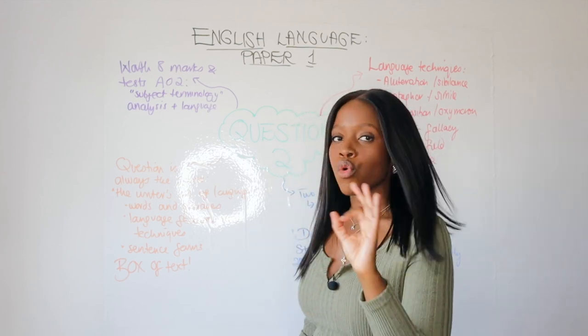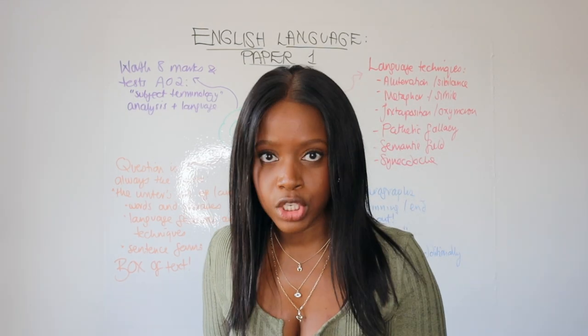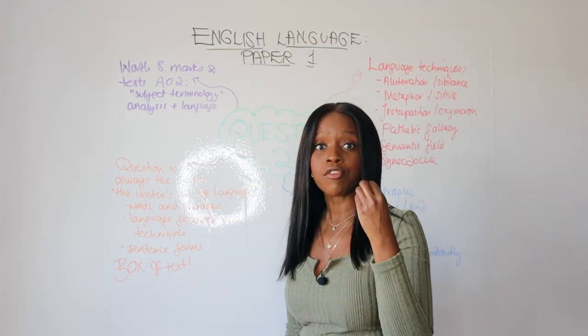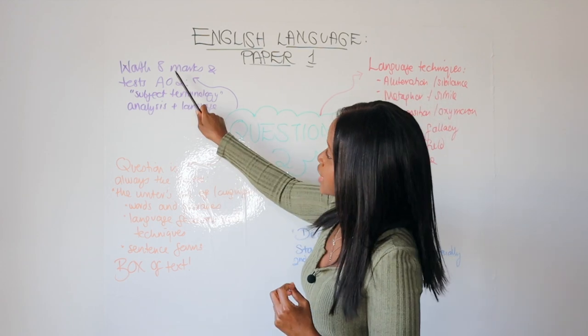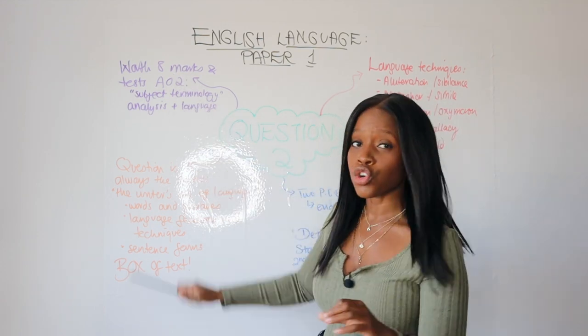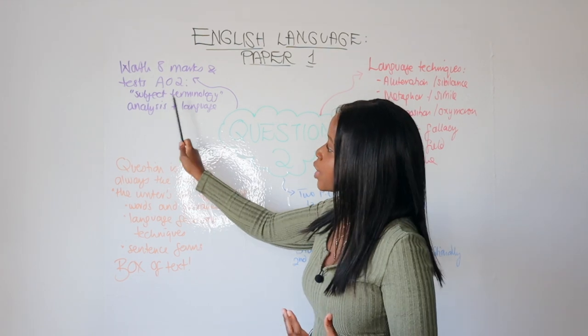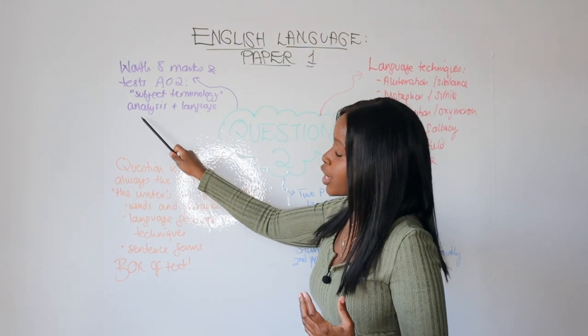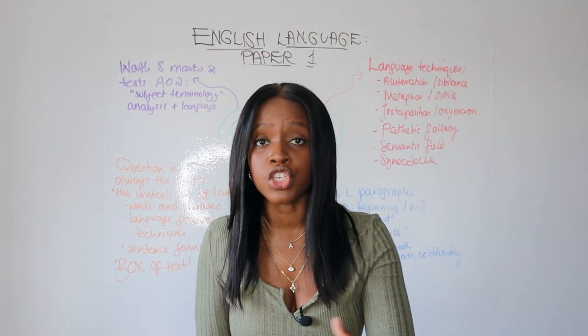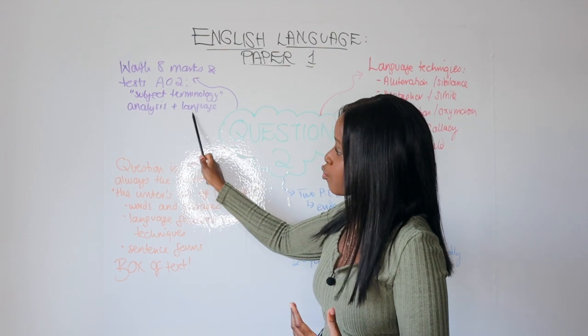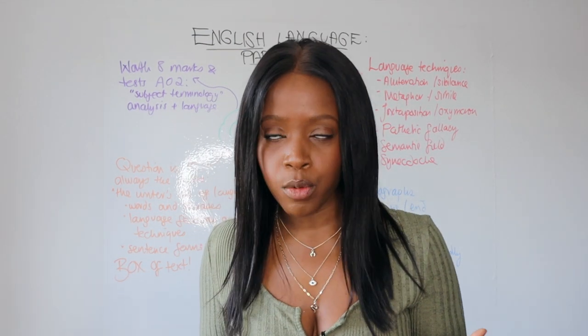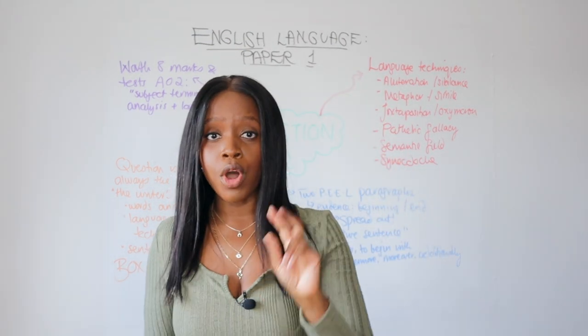So step number one, always remember and always be aware of this question. What is it expecting from you? Remember that firstly, it's worth eight marks and it tests your AO2 assessment objective two. What does AO2 mean? AO2 simply means can you show an awareness of subject terminology? Are you able, once you pick out the subject terminology, are you able to analyze it? And of course, refer to good high level language techniques.